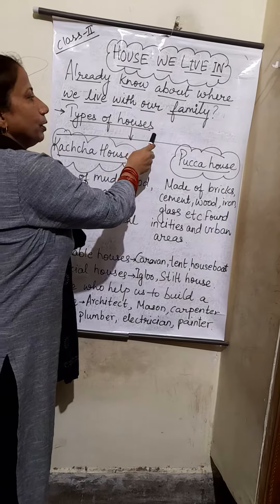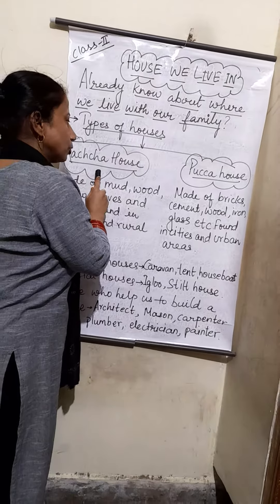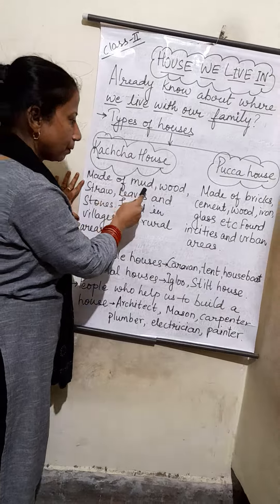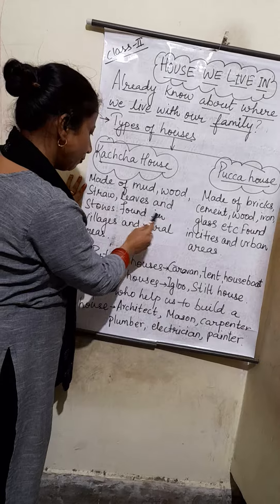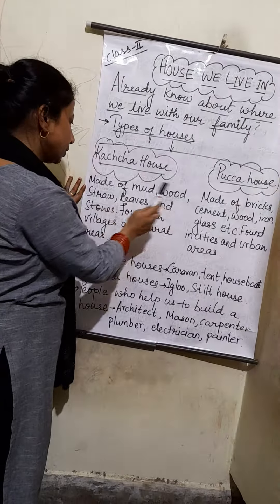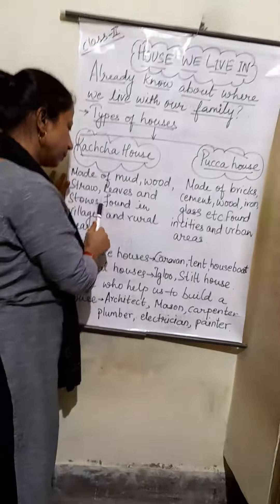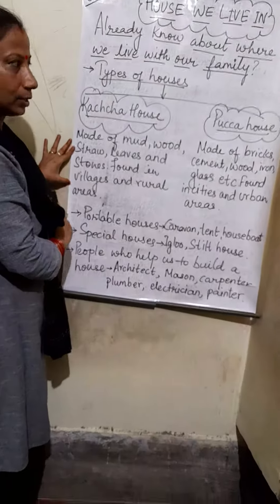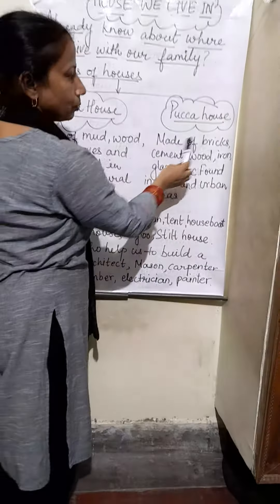In this lesson you will learn about types of houses. The first type of house I am going to describe is the Kaccha House. A Kaccha House is made up of mud, wood, straw, leaves, and stones, and is found in villages and rural areas.